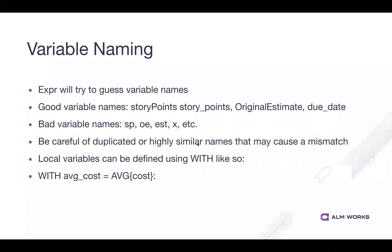As I mentioned, highly similar names or duplicated names can cause problems. I dealt with one customer who had 'original estimate' and 'original estimate dollar sign' — and Xper would get confused because it filters out special characters like the dollar sign, so it thought both were basically the same value. If you don't have highly similar names — just a couple characters off — I wouldn't worry about it too much. We'll definitely talk about how to check those variables and make sure they're pointing to the right thing.